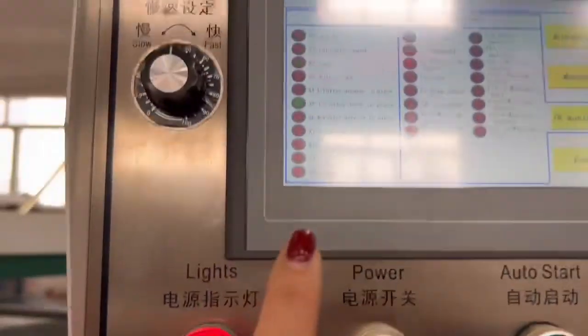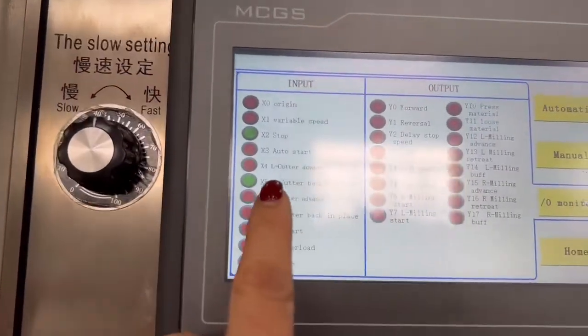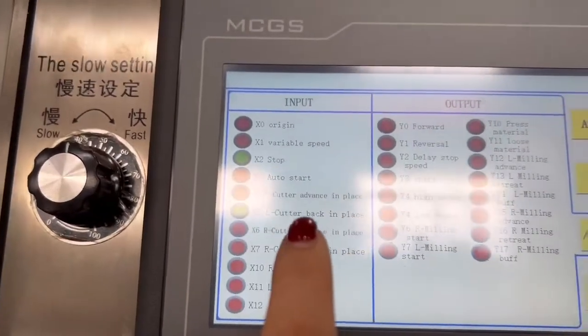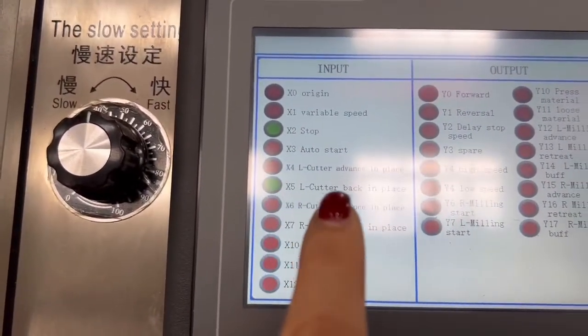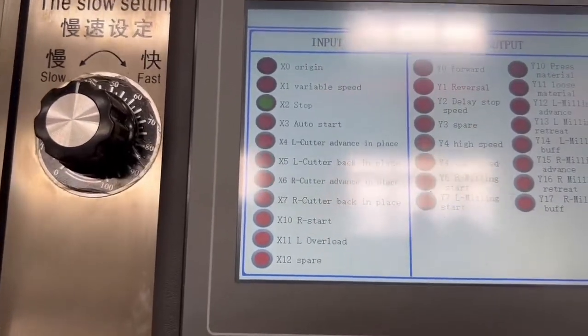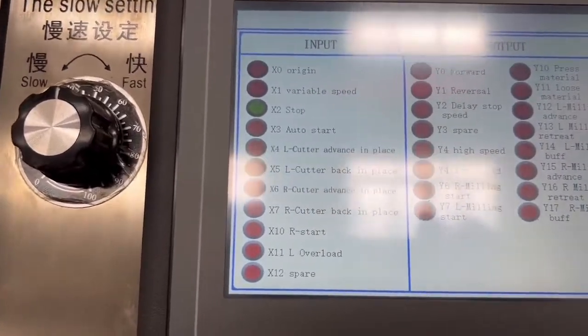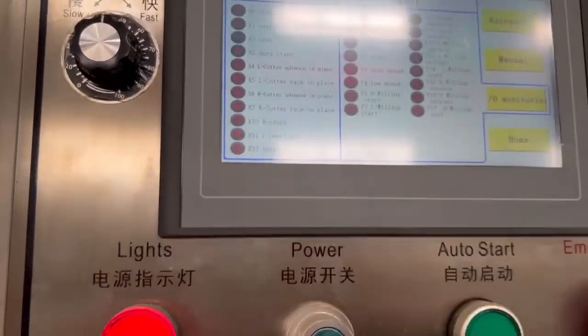When we touch the point, we can see the I.O. turn on. You can see it is related to the left cutter back in place. Actually, the back in means the return maximum limitation. So this is related to that.